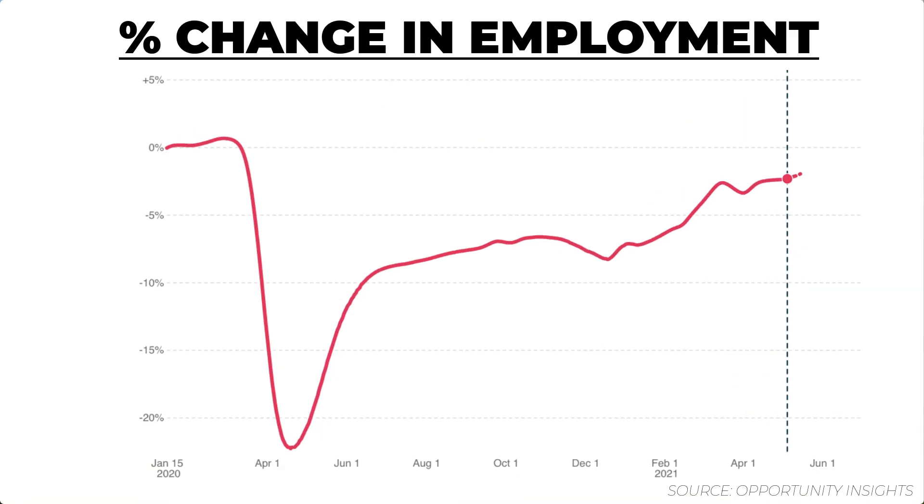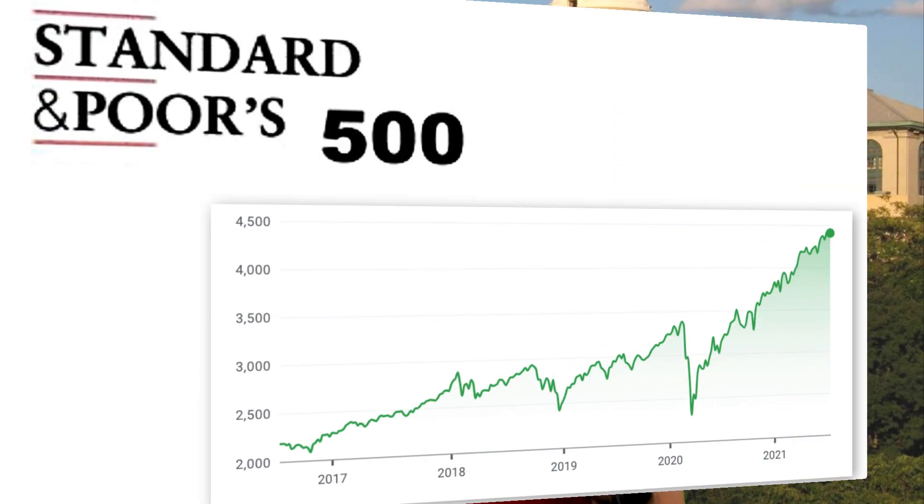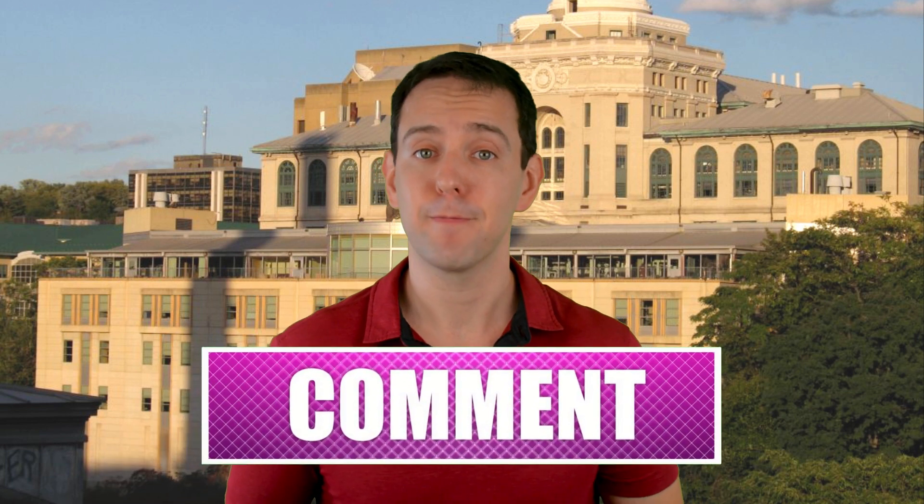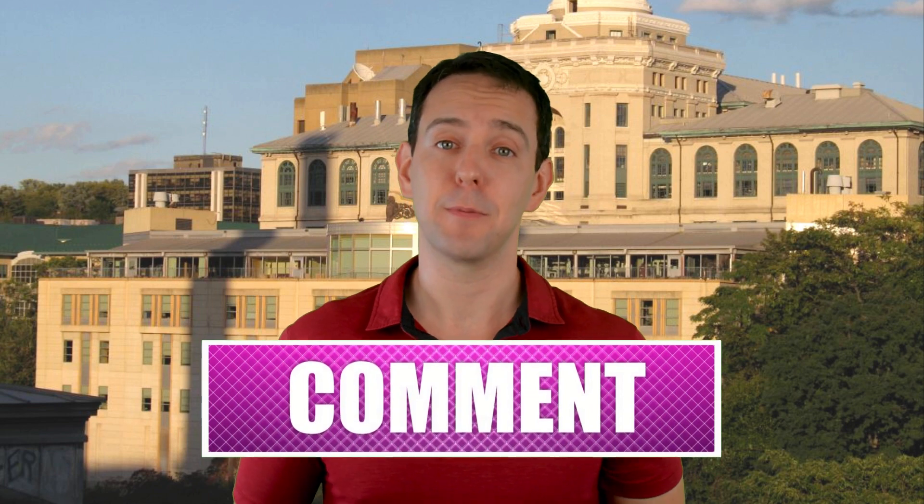So next time you see an aggregate chart telling you that things are improving, remember that they very well might be improving, but you should ask if they are improving for everyone or just those at the top. What other examples of a K-shaped recovery do you know of? Post a comment below and I'll make sure to keep the conversation going. As always, thanks so much for watching.